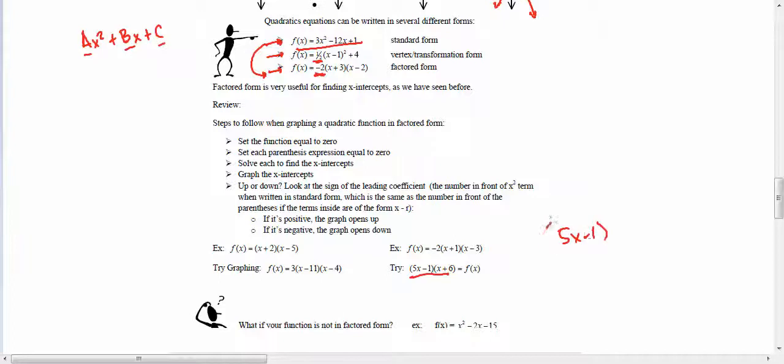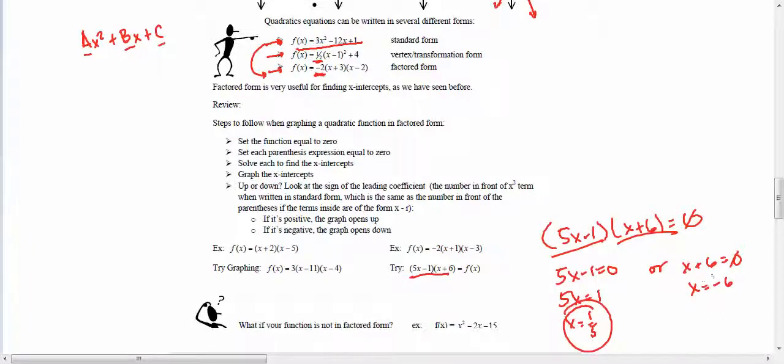5x minus 1, x plus 6 equals 0. We want to find the zeros of this function. So I would set this thing equal to 0, or this thing equals 0. So 5x minus 1 equals 0, or x plus 6 equals 0. This tells me x equals negative 6. And this tells me 5x equals 1, so x is equal to 1 fifth. I would venture to say that this graph crosses at 1 fifth and at negative 6.